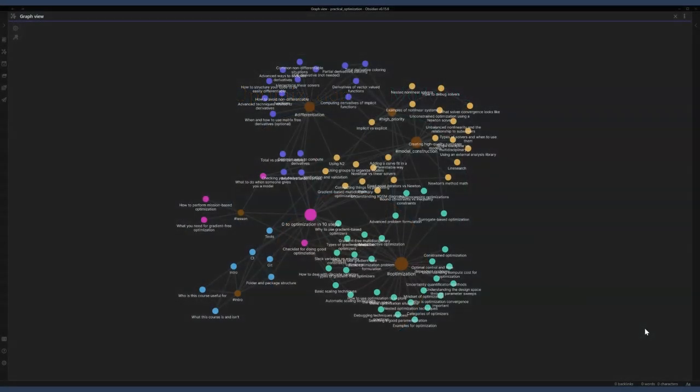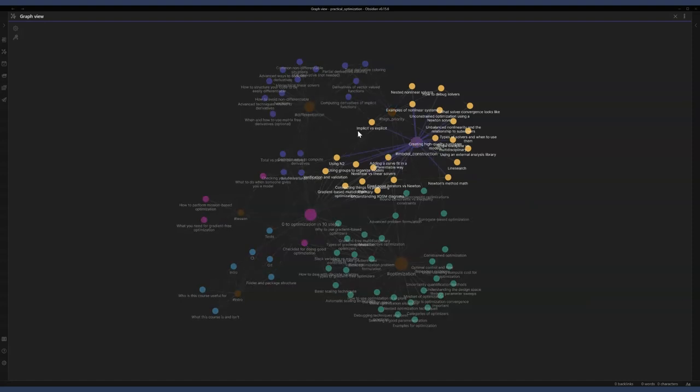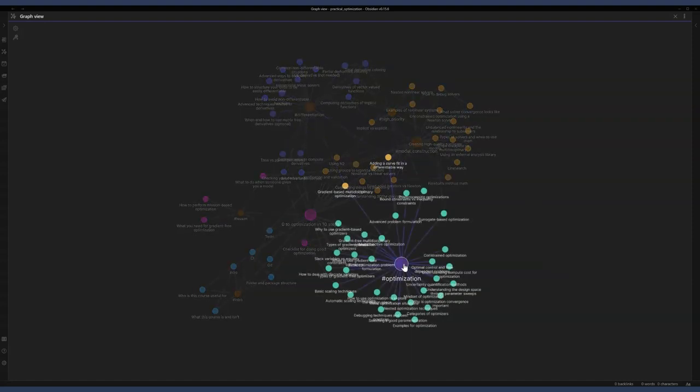Here, we have a graphical view of all of the topics covered in this course. We have three broad categories, including model construction, differentiation, and optimization. Additionally, each one of these subtopics is linked to each other. For example, if we take a look at zero to optimization in 10 steps and zoom in here, we need to understand basic optimization problem formulation, when to use different optimizers, as well as how to construct different models.